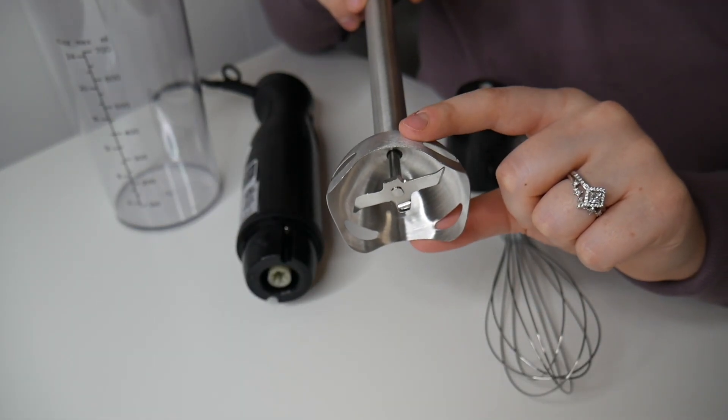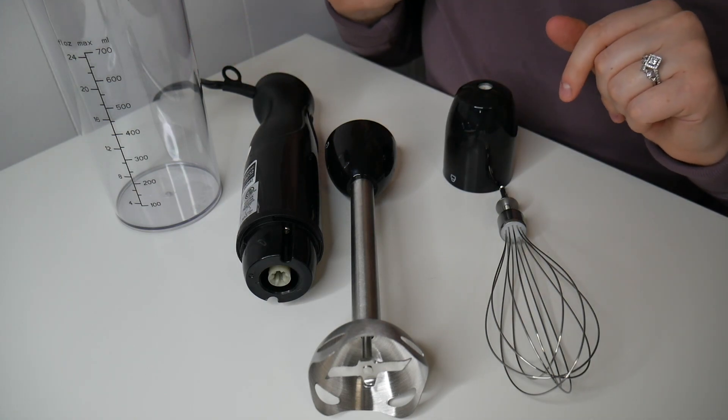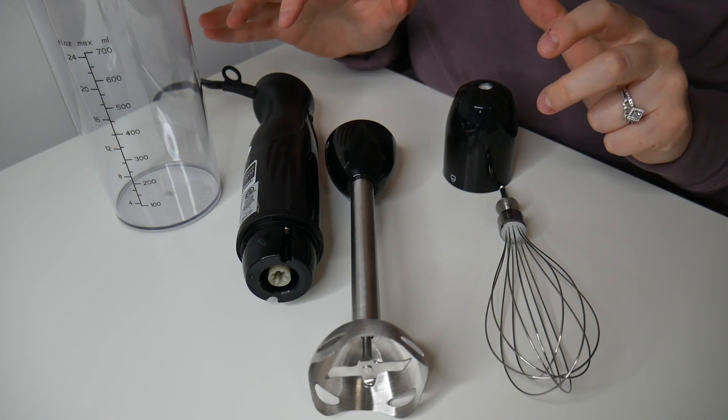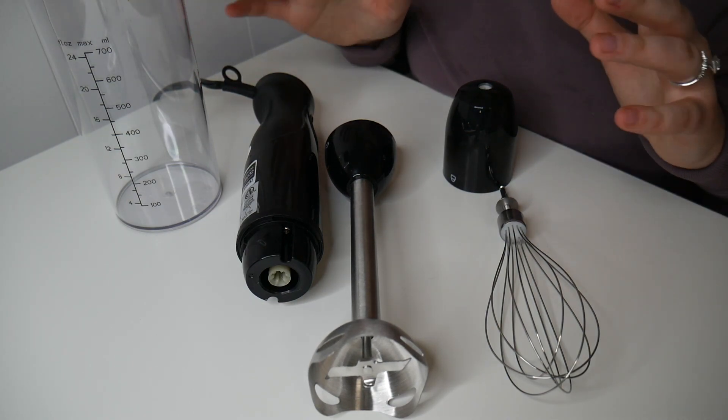I'm going to go ahead and wash up all of the parts on this and get it ready for use. I have some tomatoes that I've been cooking on the stovetop, and I'm going to blend them to make a tomato sauce for spaghetti, and we'll show you how that works.